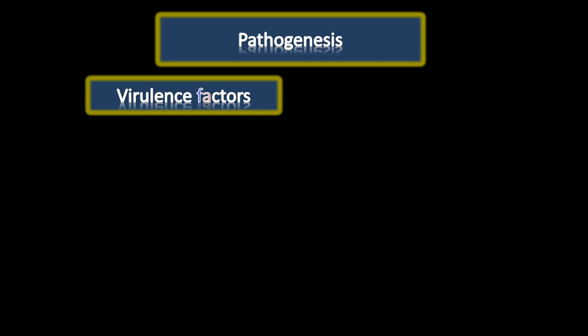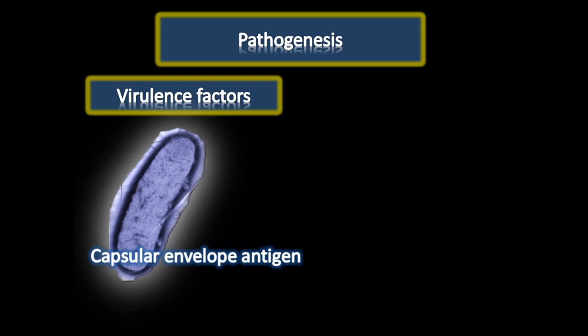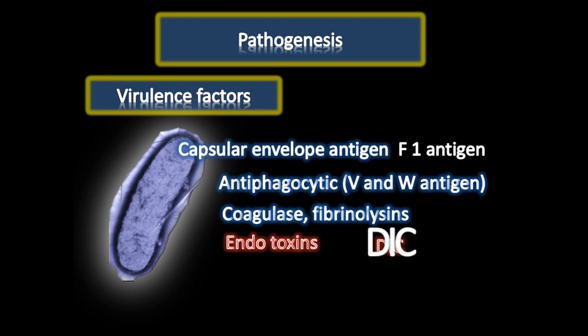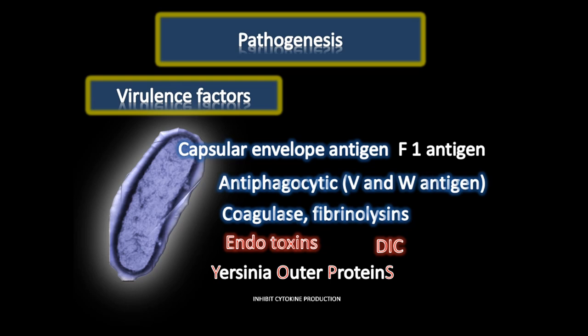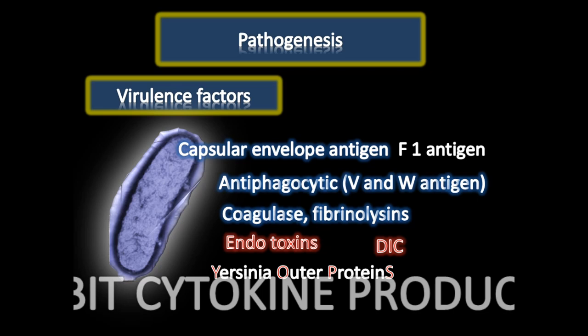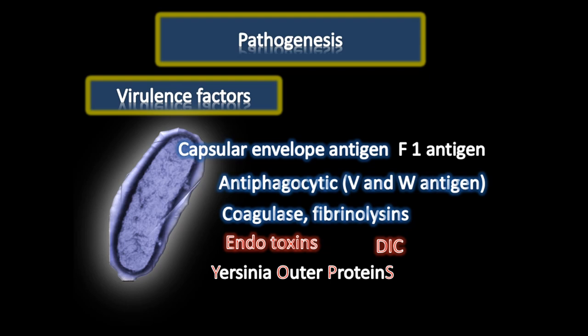Yersinia is one of the most virulent microorganisms; only 10 bacilli are required to cause disease. The virulence factors include the capsular envelope antigen or F1 antigen, best produced at 37°C; antiphagocytic VNW antigens; coagulase; fibrinolysins; endotoxins which can cause DIC and shock; and Yersinia outer proteins, which are antiphagocytic and inhibit cytokine production by neutrophils and macrophages.